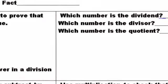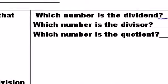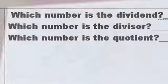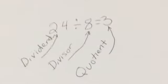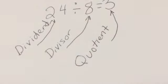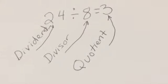Okay, let's look at the second question. Which number is the dividend, the divisor, and the quotient? And here they are: the dividend, the divisor, and the quotient.